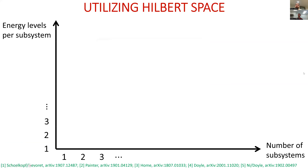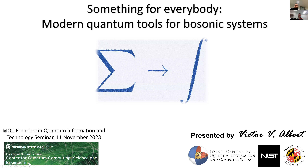Hi everyone. Welcome to the fourth Frontiers in Quantum Information and Technology Seminar through the Midwest Quantum Collaboratory — Michigan State, U of M, and Purdue. We're very happy today to have Victor Albert from NIST and the University of Maryland, who has done a lot of things in quantum information, including being the zookeeper for the Error Correction Zoo. Today, Victor is going to talk about modern quantum tools for bosonic systems. Victor, thanks so much for joining — the floor is yours.